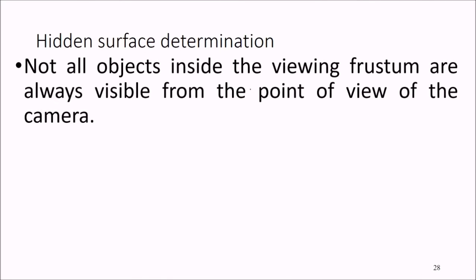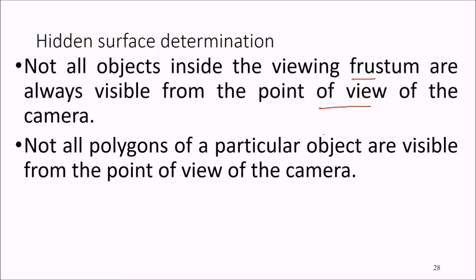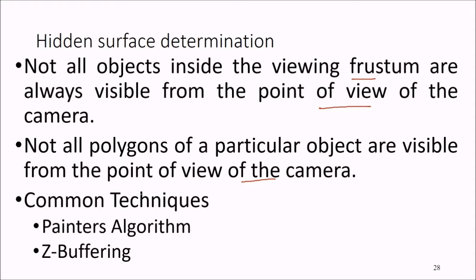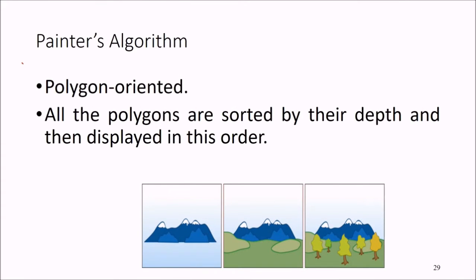Then we have hidden surface determination. Not all objects inside the viewing frustum are visible from the camera's point of view, and not all polygons of a particular object are visible either. To show only what would realistically be seen, we use techniques like the painter's algorithm and z-buffering. The painter's algorithm is polygon-oriented: all polygons are sorted by their depth and placed in that order.